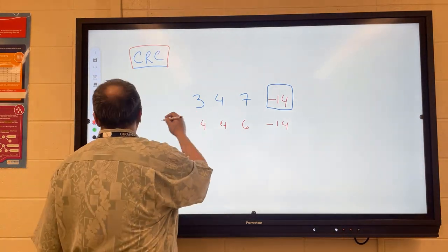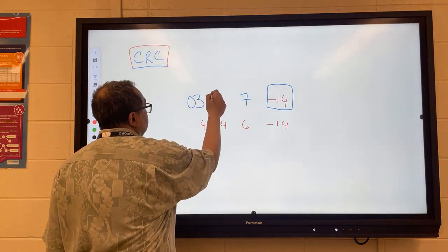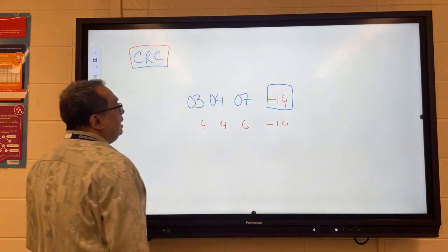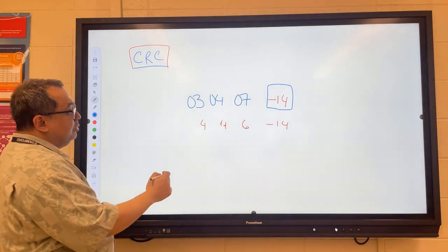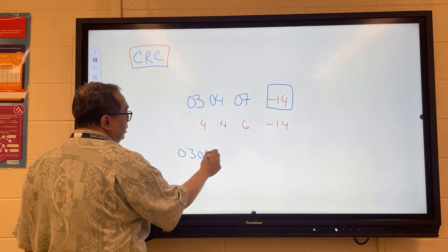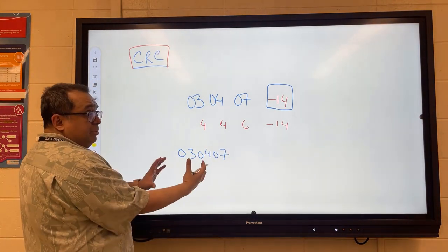So for example, this number here, we typically take two digits and just put them all together. So we just go like this: 03, 04, 07. We mush them all together.